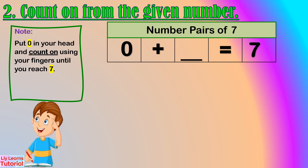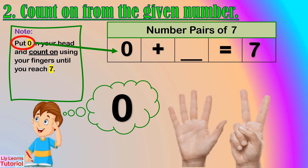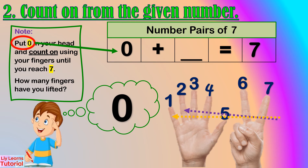Moving on to the second way to find the number pairs of 7 — we count on from the given number. Let's start from 0. Hold 0 in your head, then count up: 1, 2, 3, 4, 5, 6, 7. How many fingers have you lifted? 7 fingers. So, the number pair of 0 is 7.